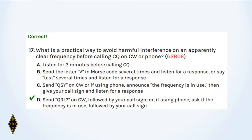And seventeen: What is a practical way to avoid harmful interference on an apparently clear frequency? In Morse code, you send QRL question mark, which is the Q code for 'is the frequency in use?' With phone, you just say 'is the frequency in use?' And after both, you send your call sign. Listening on the frequency is good, but that's not specifically what they're getting at.